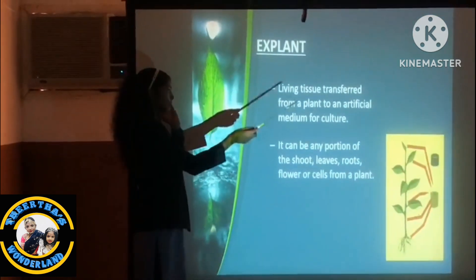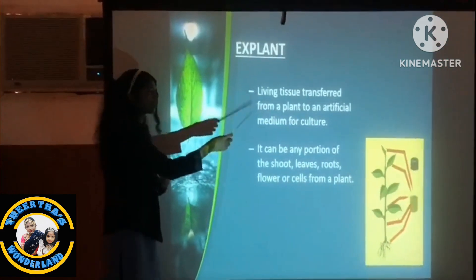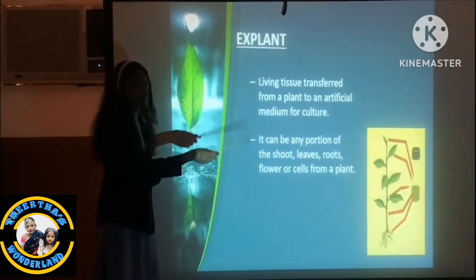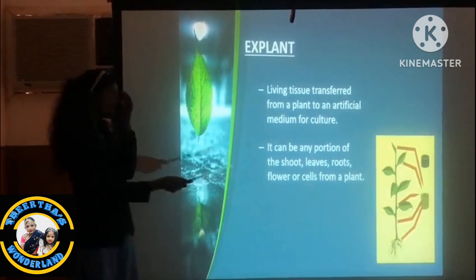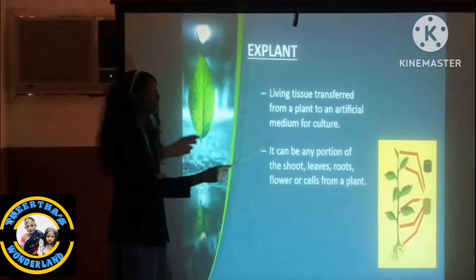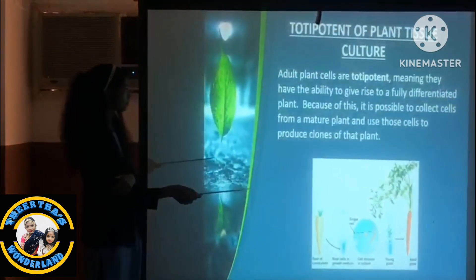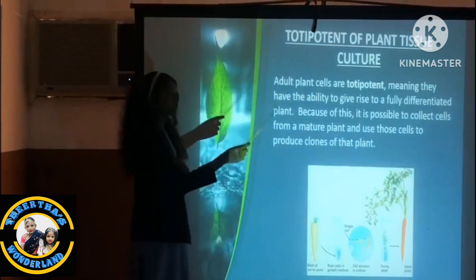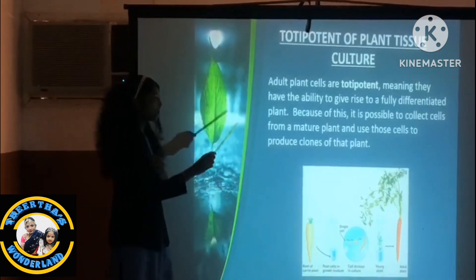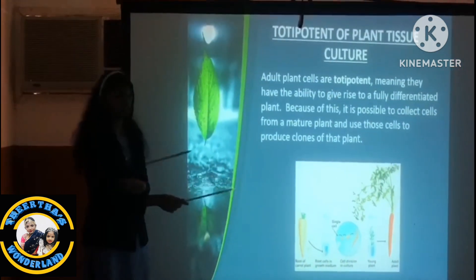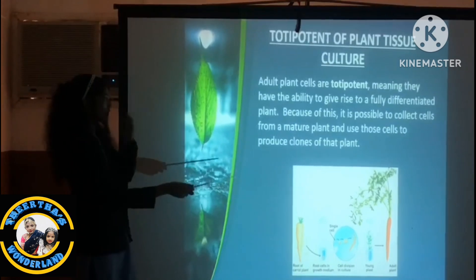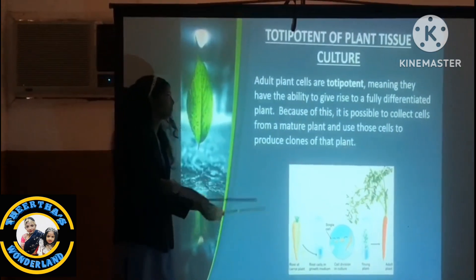The explant: living tissue transferred from a plant to an artificial medium for culture is called the explant. It can be any portion of the plant. Adult plant cells are known as totipotent, meaning they have the ability to give rise to a fully differentiated plant.